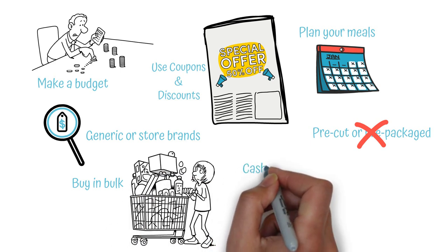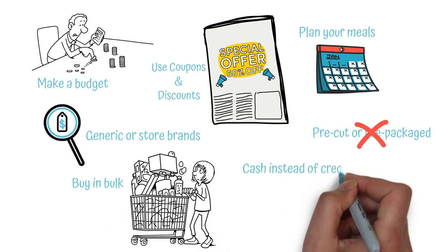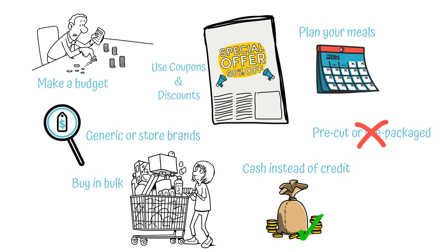And last but not least, use cash instead of credit. Using cash can help you stick to your budget and avoid overspending. This last example leads us to the next tip on how to save money.